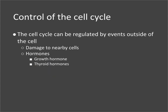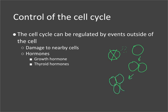The cell cycle is controlled by factors both inside and outside the cell. If a cell gets damaged, it can send out chemical messengers to nearby cells to trigger them to start going through mitosis, helping to form new cells or tissue in order to heal the damaged area.